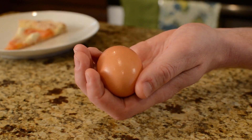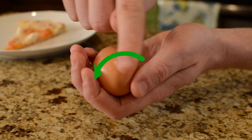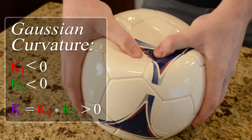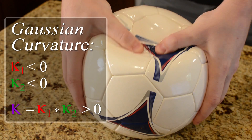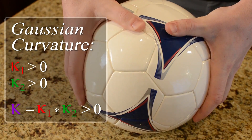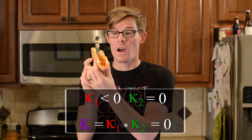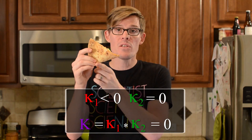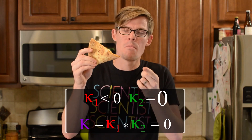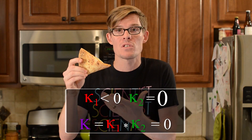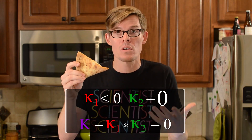An egg has Gaussian curvature in both directions. We can tweak a surface, but total Gaussian curvature is constant. Bending our flat sheet of pizza in one direction means that the other direction becomes more rigid to keep the Gaussian curvature at a total of zero.